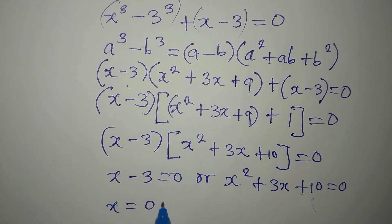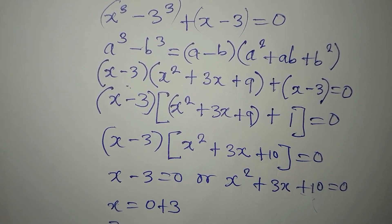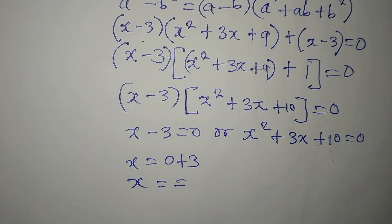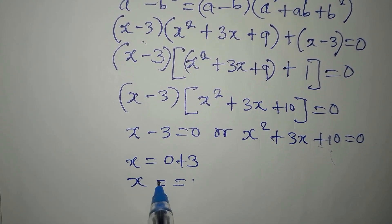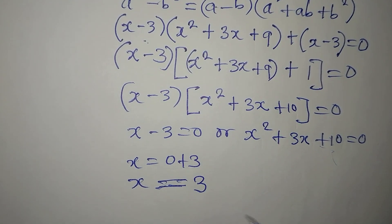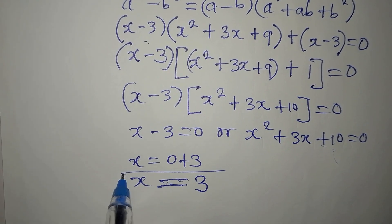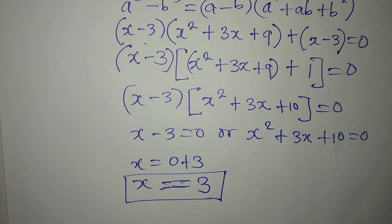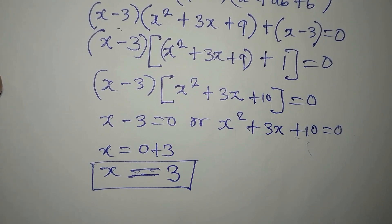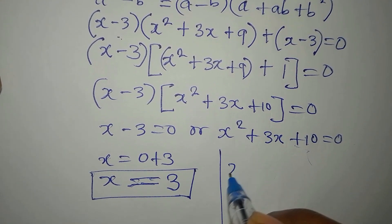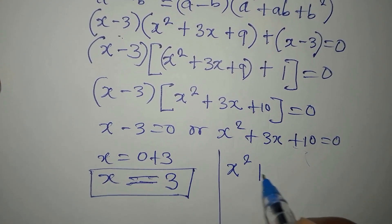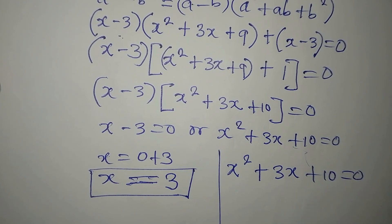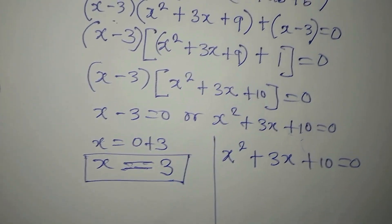From the first factor, x - 3 = 0, so x = 3. We are done with the first factor. For the second factor x² + 3x + 10 = 0, we will use the quadratic formula.